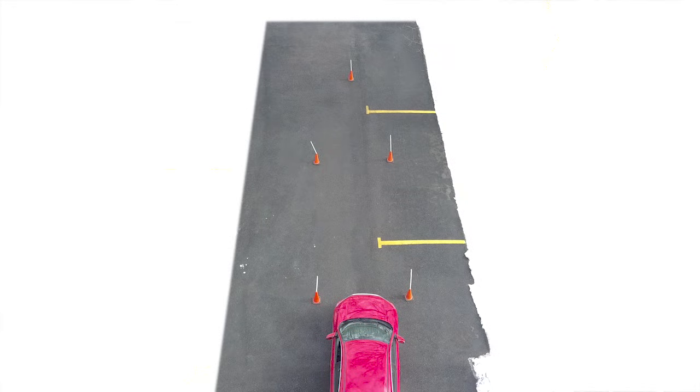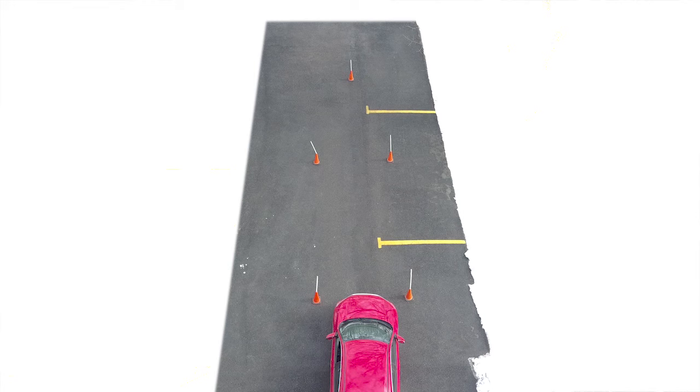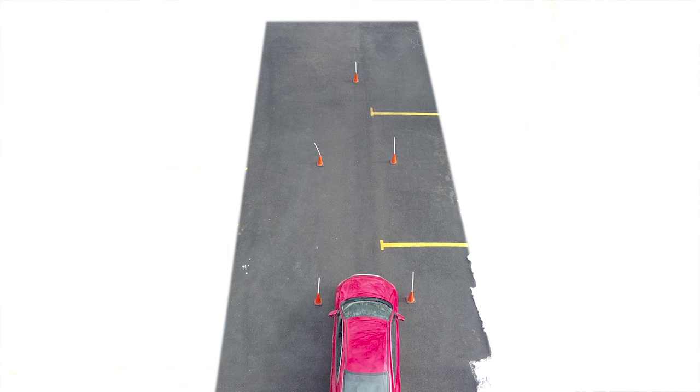You begin with the front of the car even with the back two cones, coming to a complete stop with the middle of the car centered on the front cone. With your foot on the brake, you will progress forward at a snail's pace, keeping the center of the car centered on the front cone.